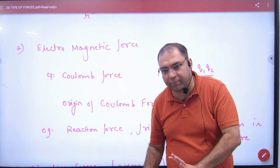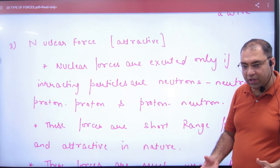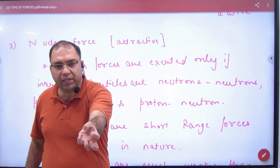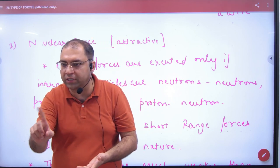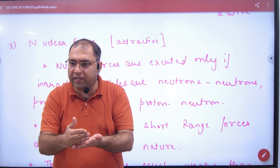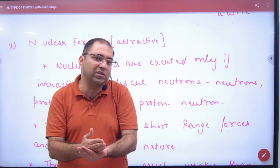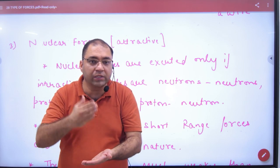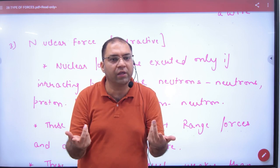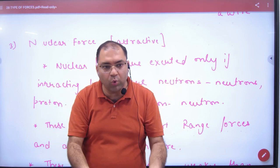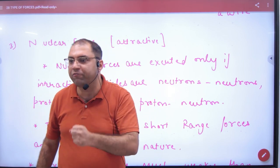The next force is nuclear force. Nuclear force exists in the nucleus. What exists in the nucleus? Neutrons and protons. This is not Coulomb force — Coulomb force is positive-negative. This force acts between protons and neutrons, and even between neutrons, which are neutral. Electrostatic force does not apply to neutrons — nuclear force does. We study this in Plus Two.